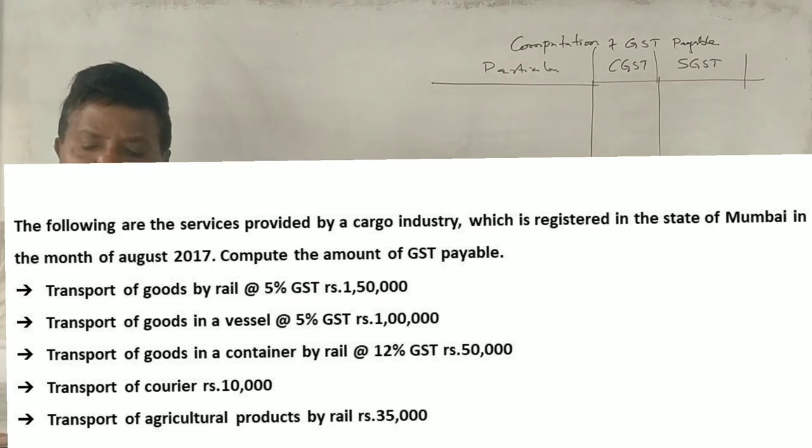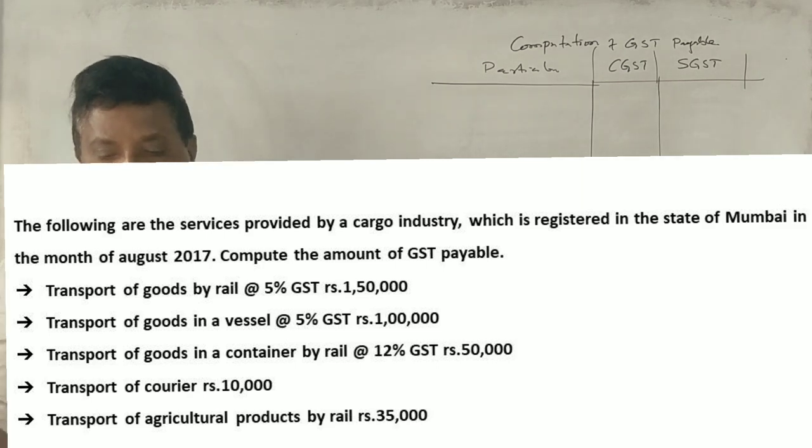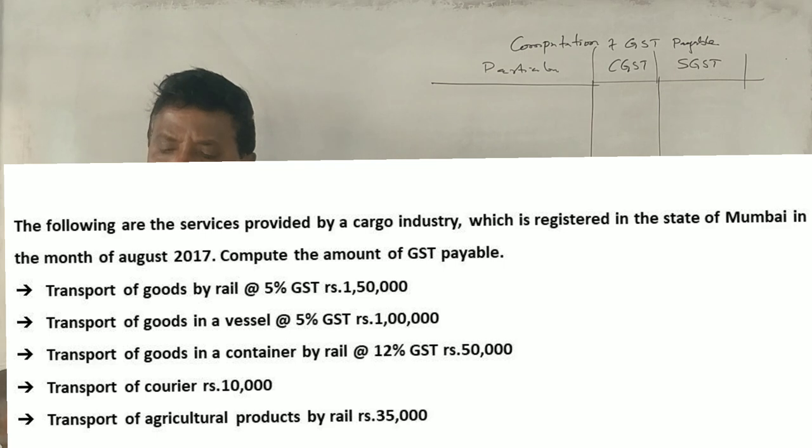The following are the services provided by a cargo industry, which is registered in state Mumbai in month of August 2017. Compute amount of GST payable. The transport of goods by rail at 5% GST is rs.1,50,000.